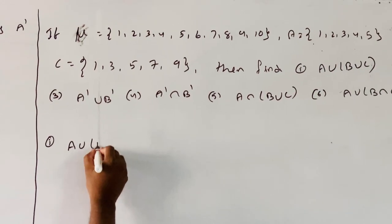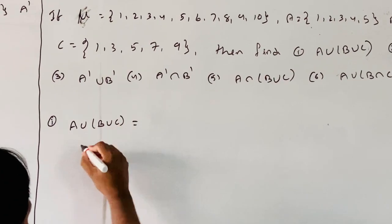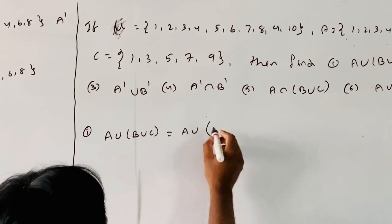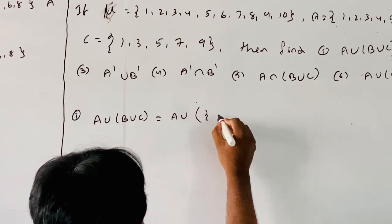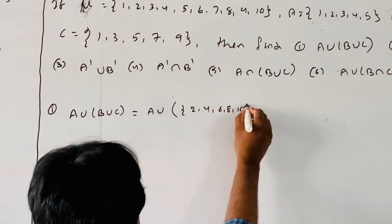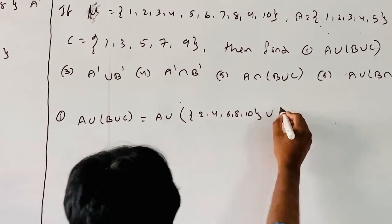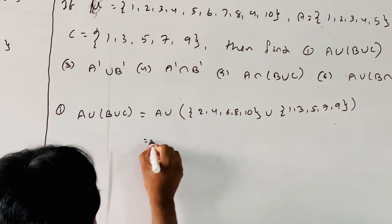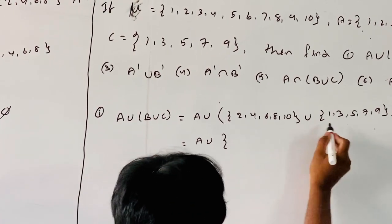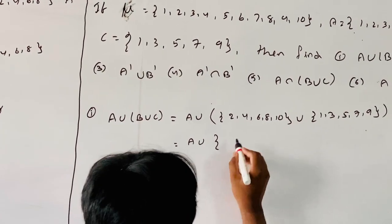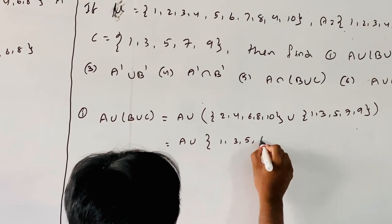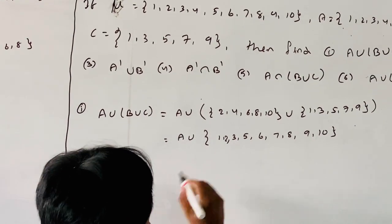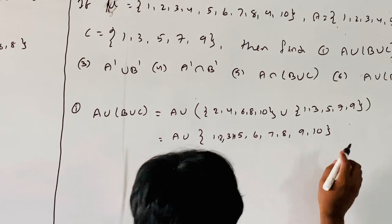Finding the first one: A union B union C. A union B equals {1, 2, 3, 4, 5} union {2, 4, 6, 8, 10} equals {1, 2, 3, 4, 5, 6, 7, 8, 9, 10}. Then union with C equals {1, 3, 5, 7, 9} gives {1, 2, 3, 4, 5, 6, 7, 8, 9, 10}.